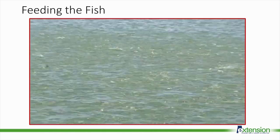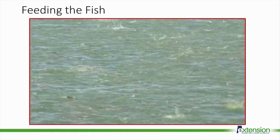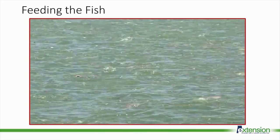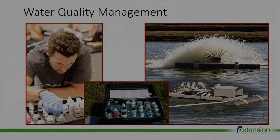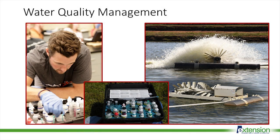Catfish farmers may feed upwards of 100 pounds per acre per day during the summer months — that's a lot of nutrients going into the pond. Farmers have to closely monitor water quality to ensure optimum growing conditions. One of the most dynamic aspects of water quality is dissolved oxygen. Oxygen levels rise and fall during the day and tend to be their lowest just before sunrise, so sometimes mechanical aeration is used to increase dissolved oxygen levels.